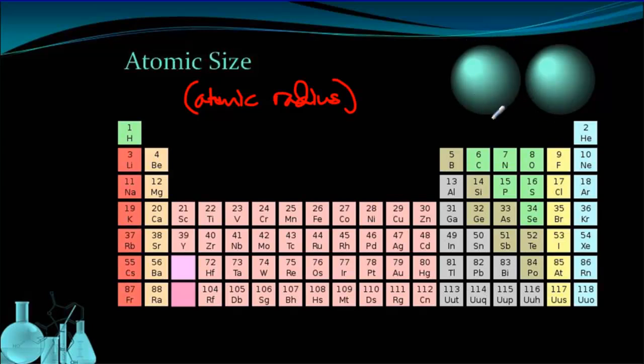We look at two adjacent atoms, and we basically take the distance from the center of one to the center of the other. So that distance divided by two is called the atomic radius. Now sometimes these are overlapping a little bit, which is why it's not just from the center to the edge. So what happens to the atomic radius as we move across a period or move down a group?